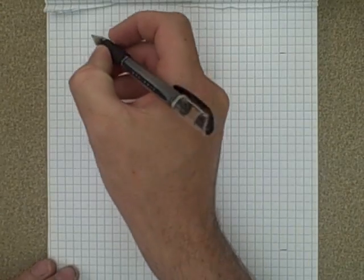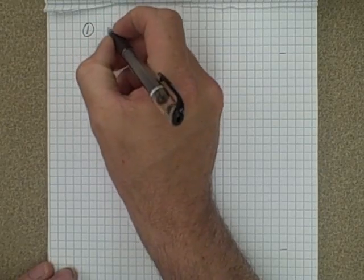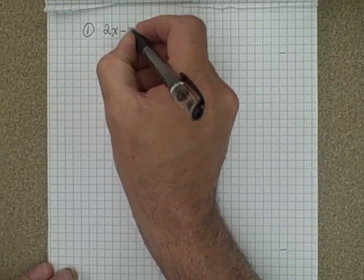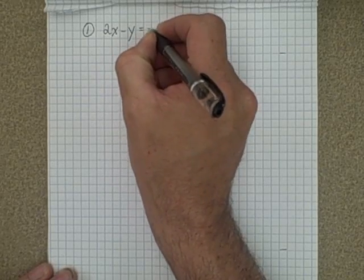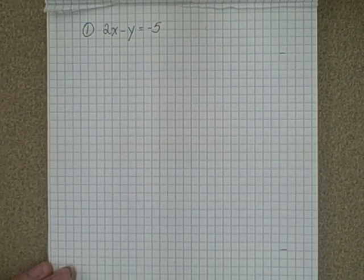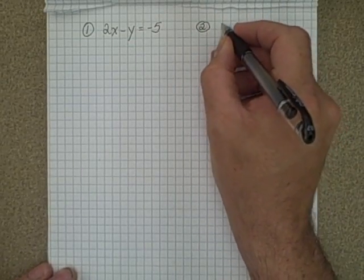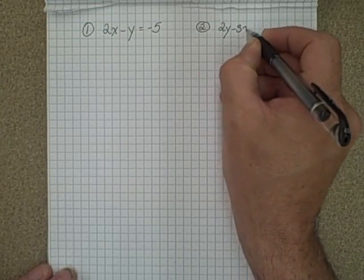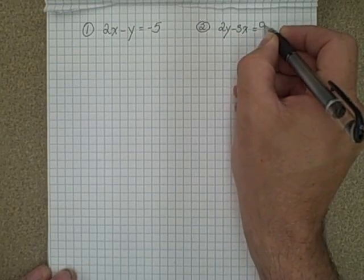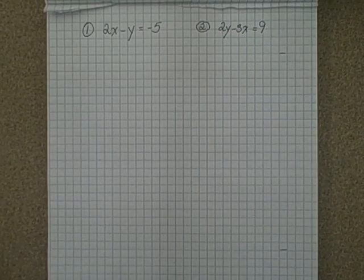Okay, the first video that I'm going to make here is for the first section, and that's solving linear equation systems graphically, meaning the graphical method. It should be a review for most of you, and what I'm going to do is just start with a simple question here and work it out. So the question that I'm going to do is I'm going to solve 2x minus y is equal to negative 5. It's going to be my first equation, and then I'm also going to have my second equation being 2y minus 3x is equal to 9.